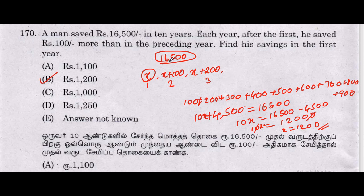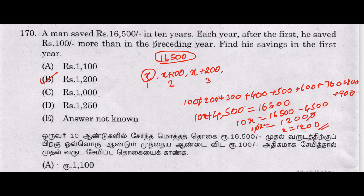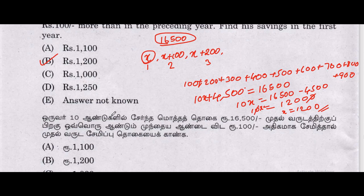Adding 100 rupees each subsequent year to 1,200 gives the savings for each of the 10 years. If you add all these amounts together, you get 16,500. That's the answer for problem 170.